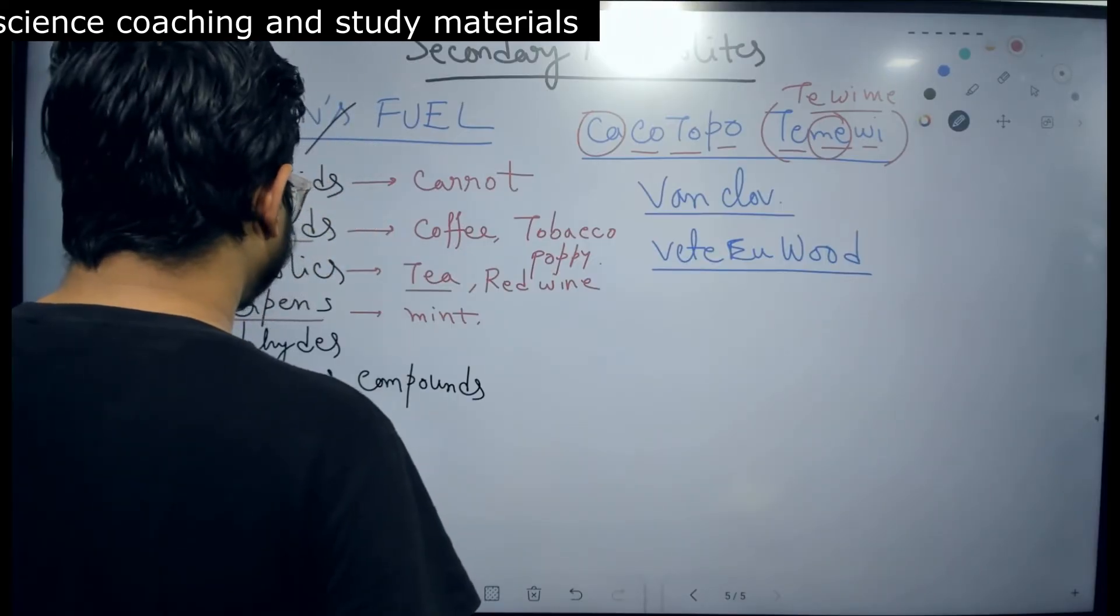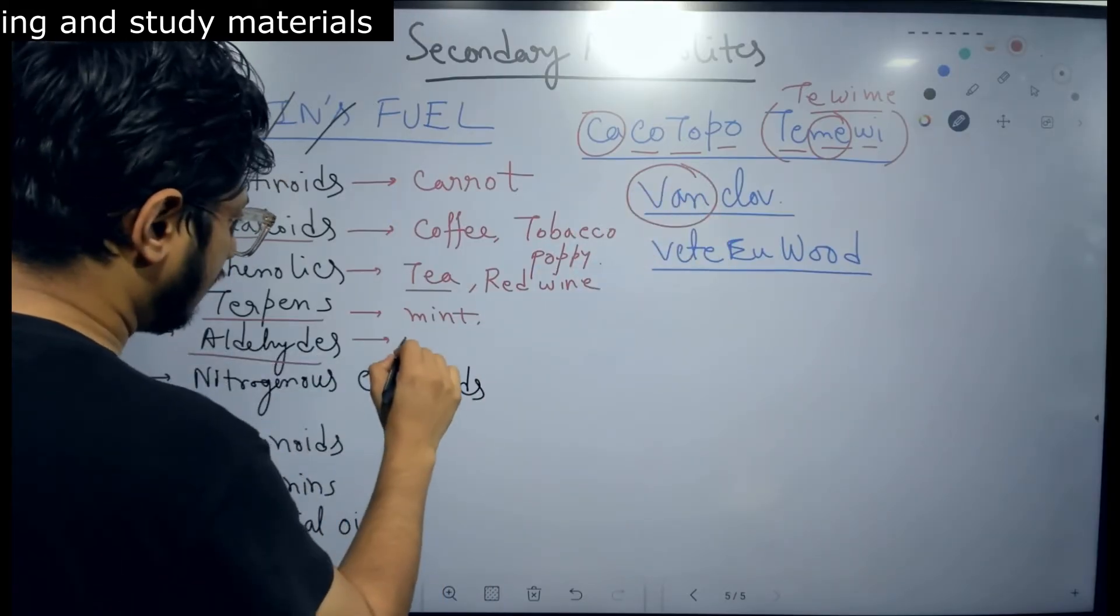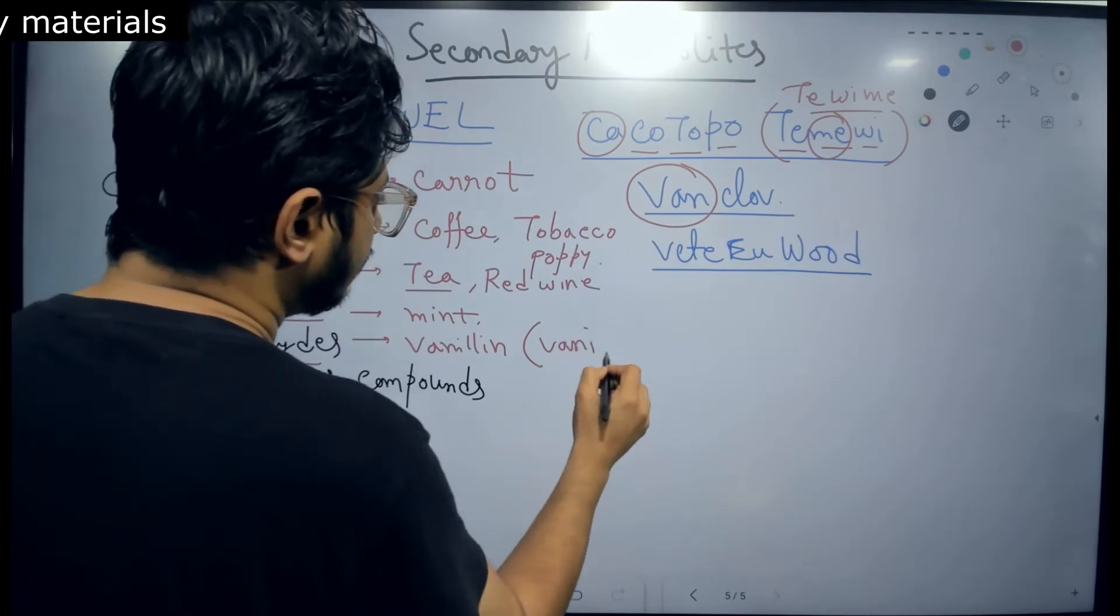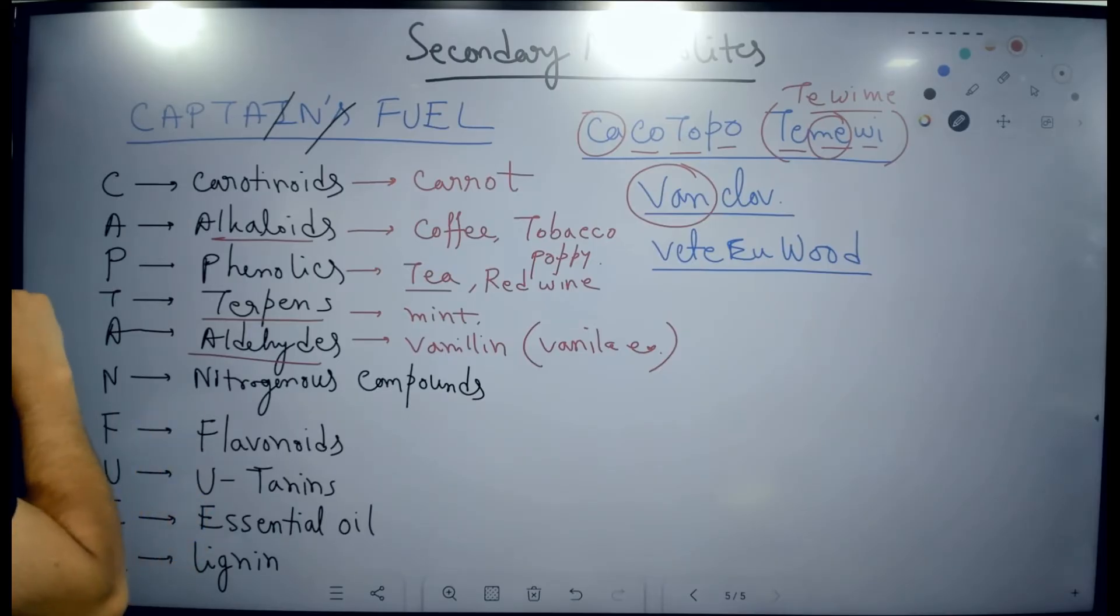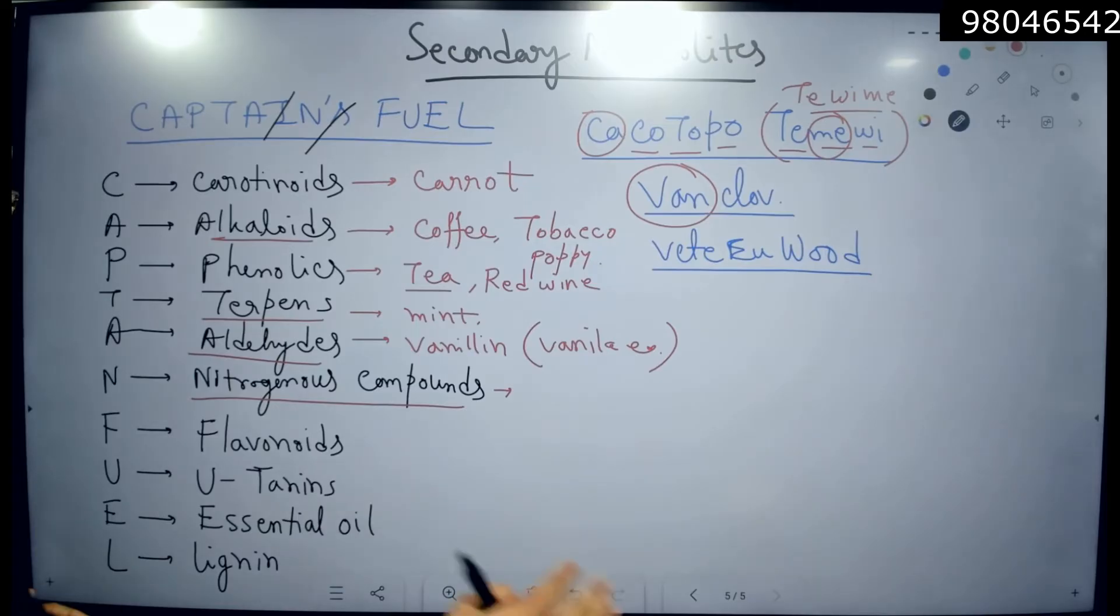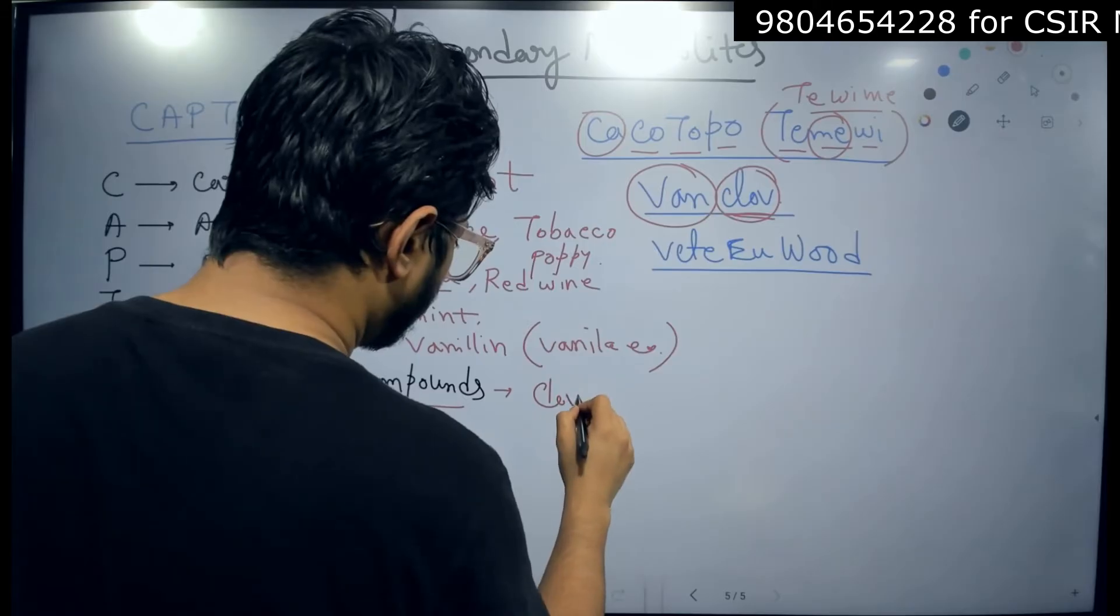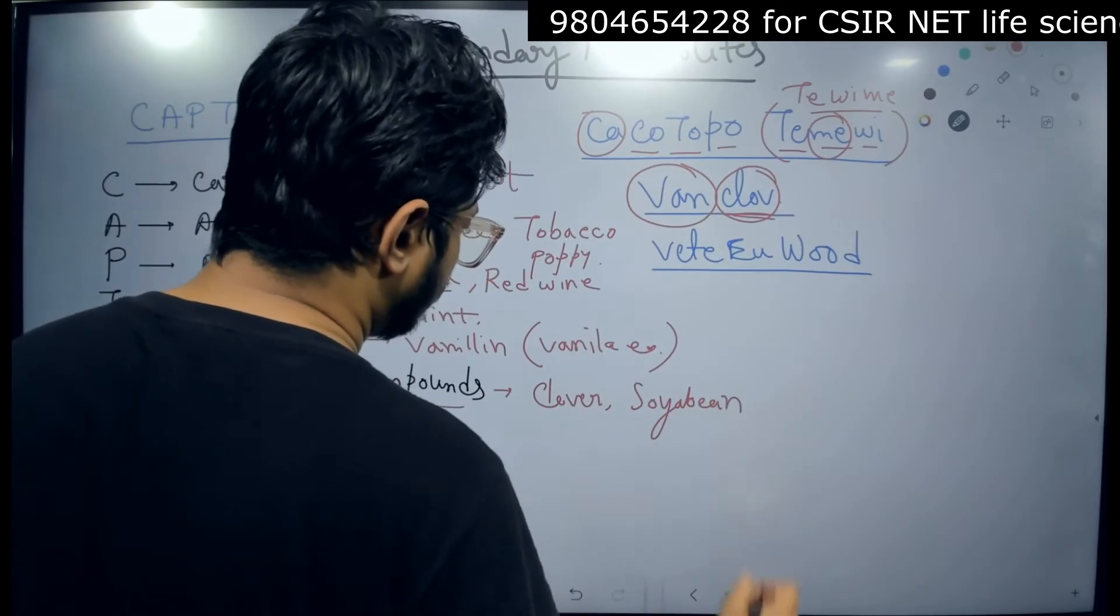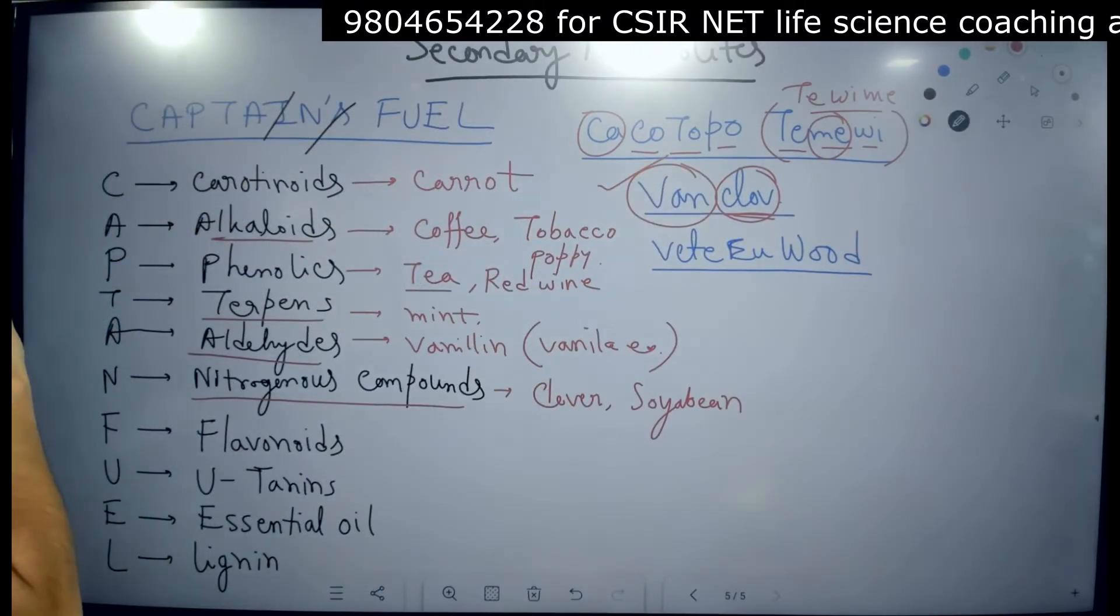The next one is aldehydes - VAN for vanillin, which is present in vanilla extract. And nitrogenous compounds - the nitrogenous compound is clover, you can see clove, so it is clover and also soybean. This part of the segment is also done.